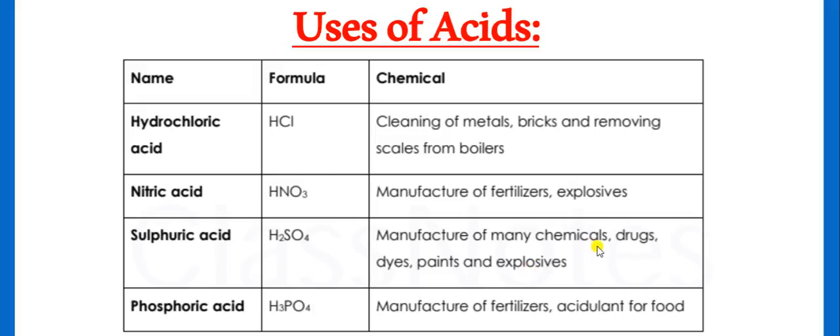Sulfuric acid: chemicals, drugs, dyes, paints and explosives. And phosphoric acid is fertilizers and food.